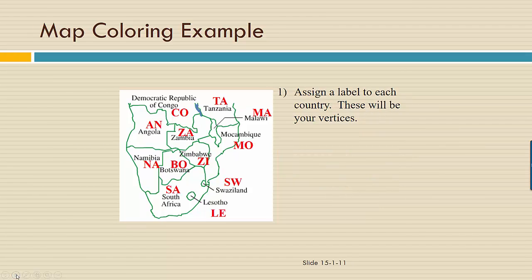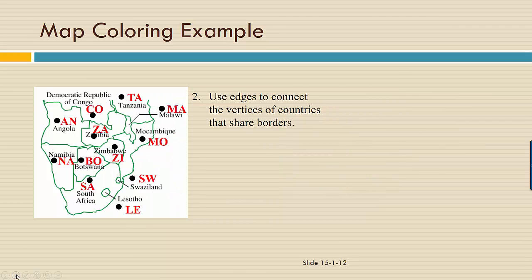Here I've assigned a label to each country. These are going to be our vertices. Next, we're going to use edges to connect the vertices of countries that share borders. Let's look at the vertices and the map side by side.